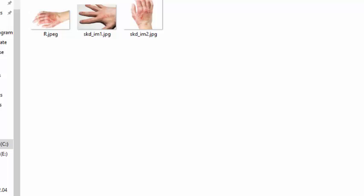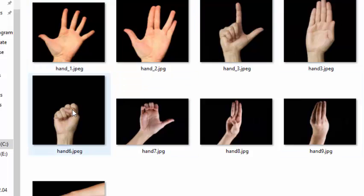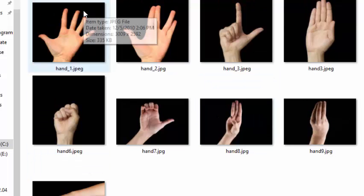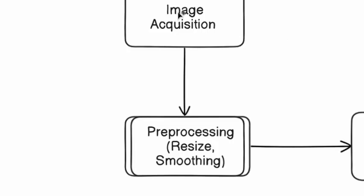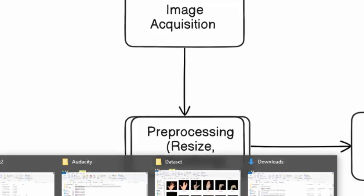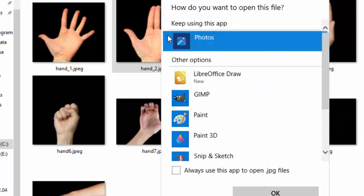There could be various projects where you want to segment the skin area first. Today we are going to focus on an ASL dataset using a black background with skin-colored hands in the foreground. The first step is image acquisition, followed by pre-processing, which could involve resizing, smoothing, and noise removal. Because our images are already smooth and denoised, we will not be covering denoising methods in this video.